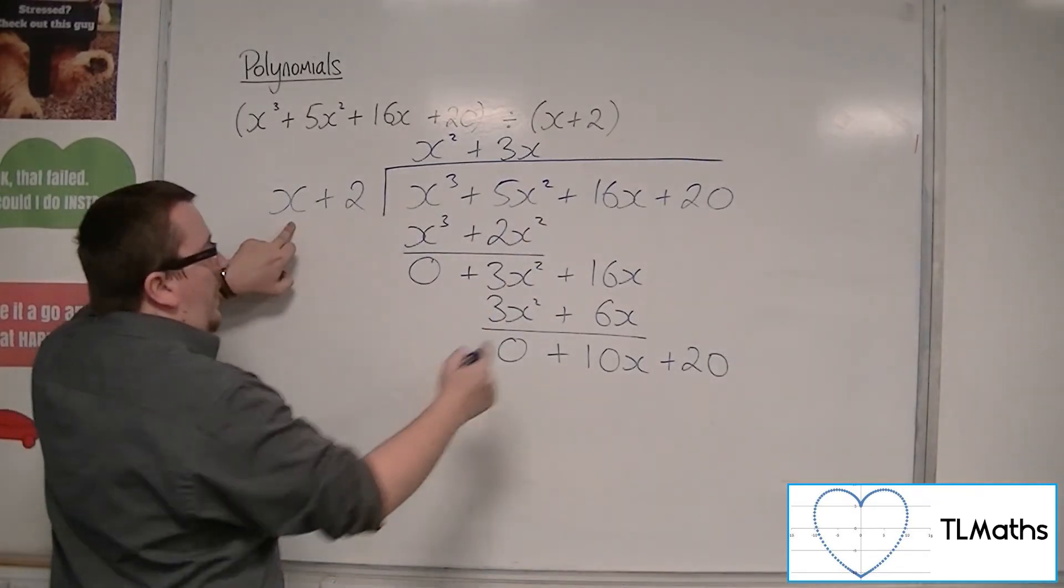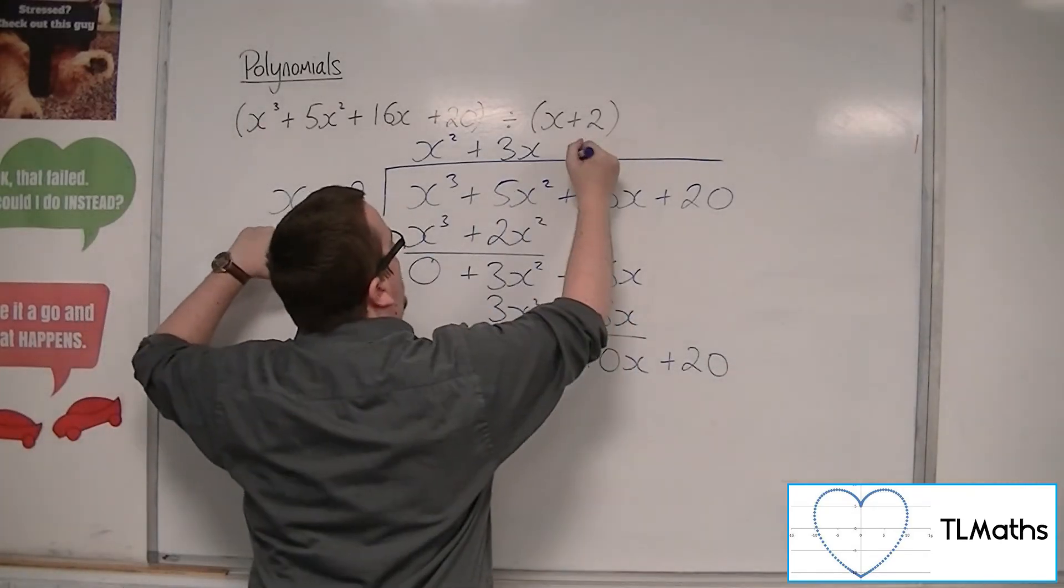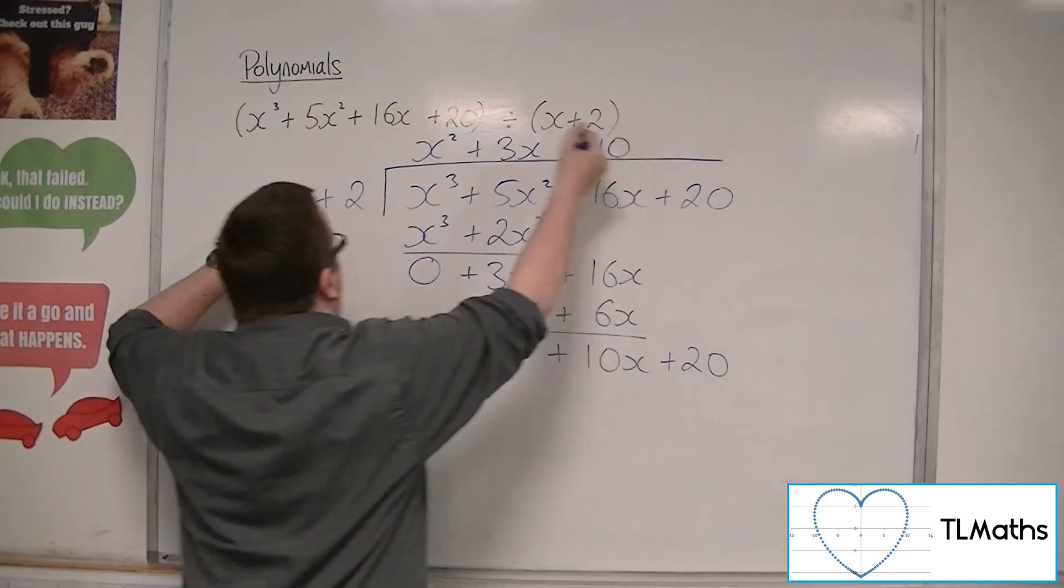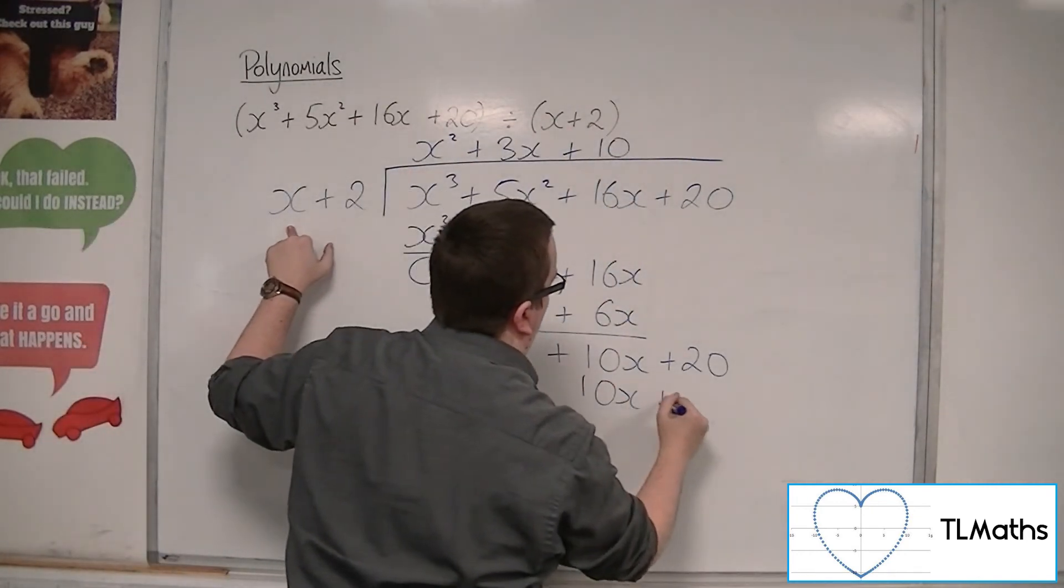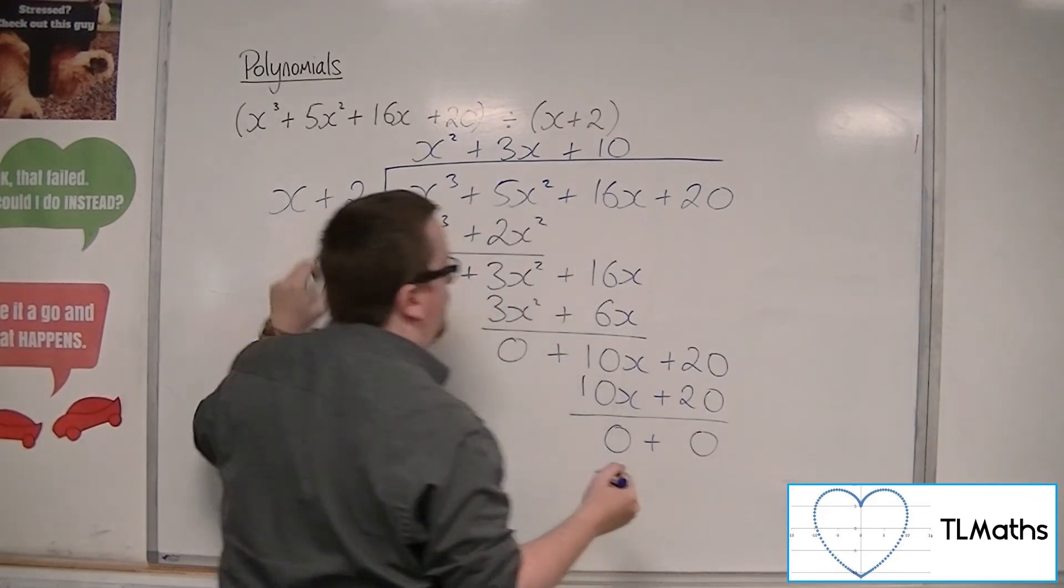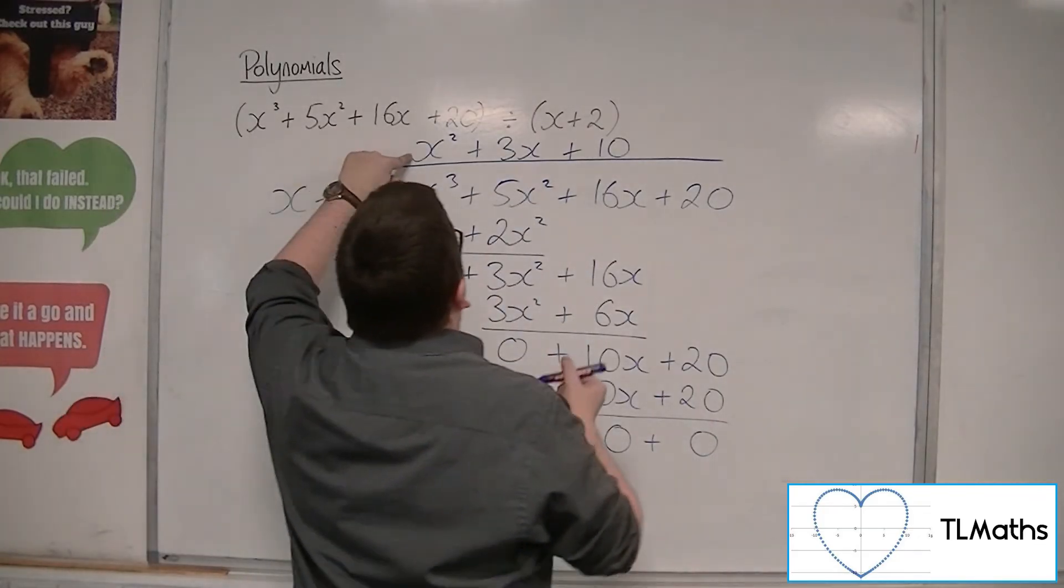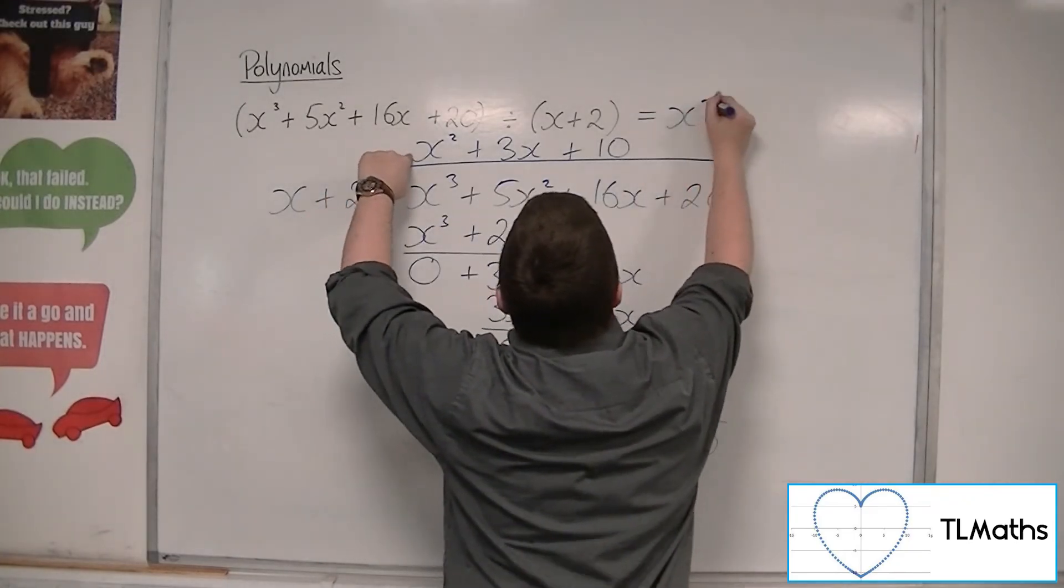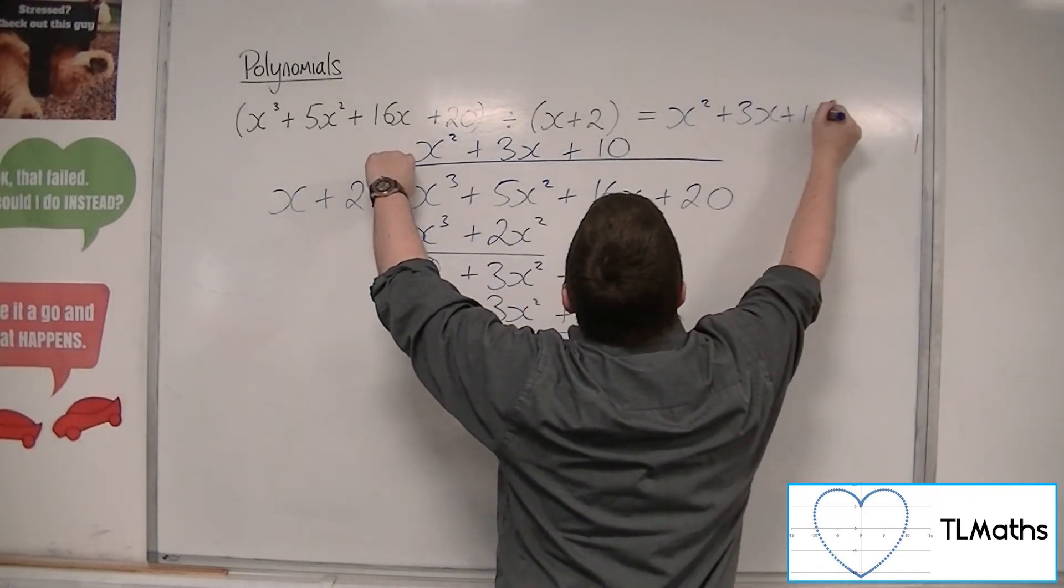And then x's into 10x go 10. 10 lots of x plus 2 is 10x plus 20. Draw a line, perform a subtraction, and so the answer appears above.